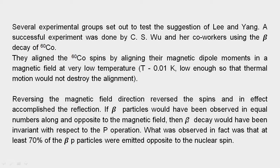If beta particles had been observed in equal numbers along and opposite to the magnetic field, then beta decay would have been invariant with respect to parity. What was observed in fact was that at least 70% of the beta particles were emitted opposite to the nuclear spin. So we are always finding that almost 70% of beta particles are emitted opposite to the nuclear spin.